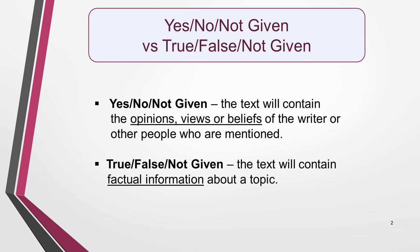The difference is in the type of information contained in the text. For yes, no, not given questions, the text will contain opinions, views or beliefs of the writer or other people who are mentioned. For true, false, not given questions, the text will contain factual information about a topic. Many students dread this type of question, for the reason I'll explain in a minute. However, if you learn the tips and practice the strategy in this video, your skill at answering them will improve, as will your confidence.